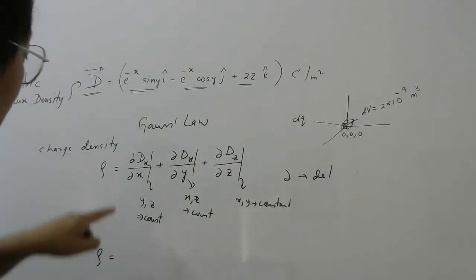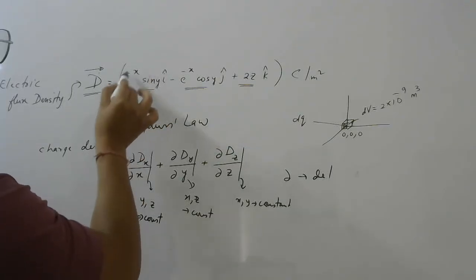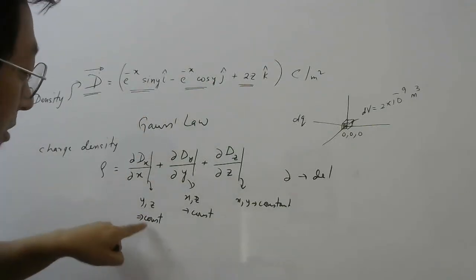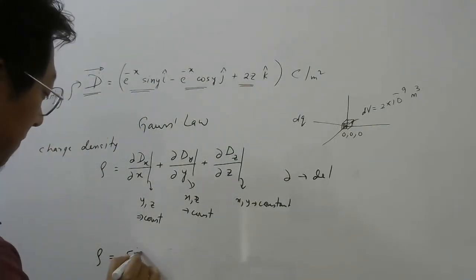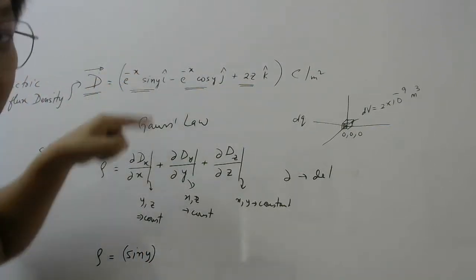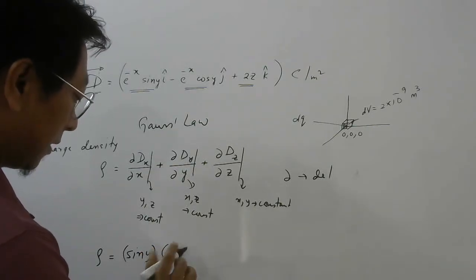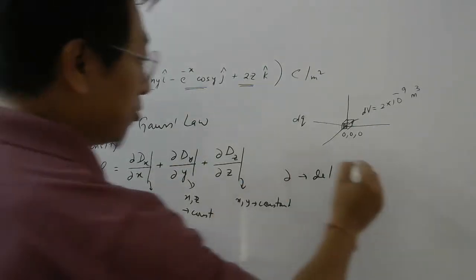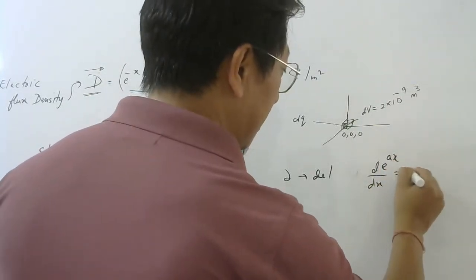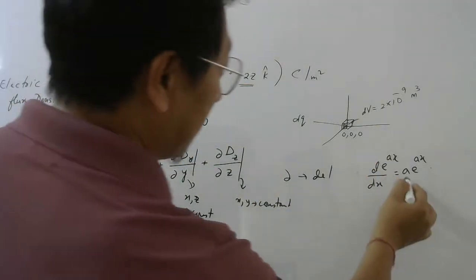Let's do the differentiation — it's quite easy. Looking at the x-component: e^(−x) sin y. Taking the derivative with respect to x, sin y is treated as constant, so it comes outside. The derivative of e^(−x) is −e^(−x), because the derivative of e^(ax) is a·e^(ax) and here a = −1.